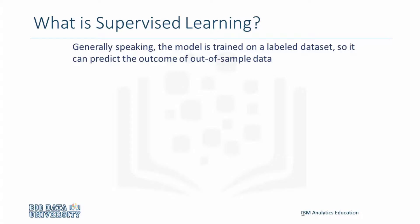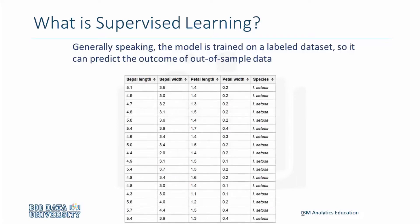It's important to note that the data is labeled. This example is taken from the Iris data set, which is a famous data set used for machine learning. The names — sepal length, sepal width, petal length, petal width, and species — are called the attributes. The columns are called features, which include the data.